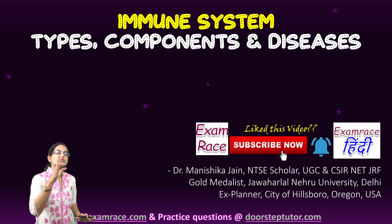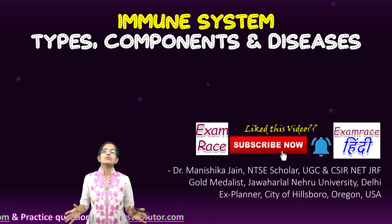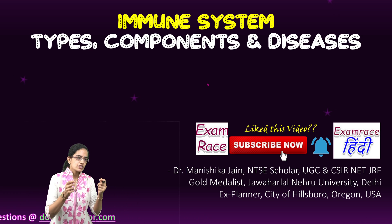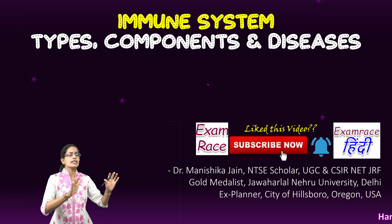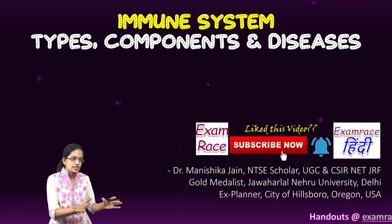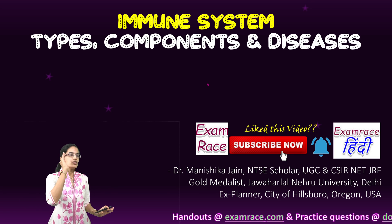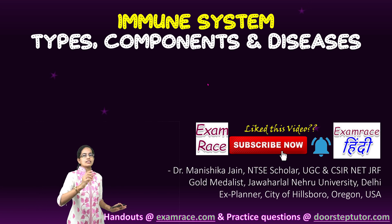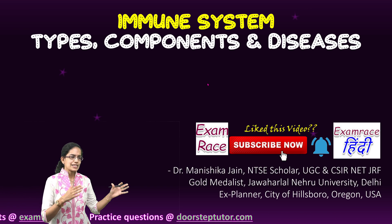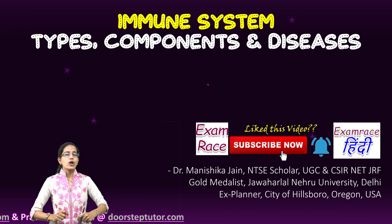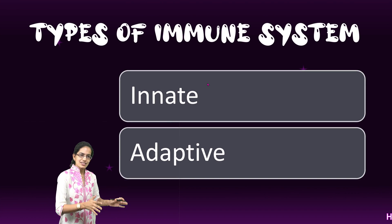Immune system types, components and diseases related to the immune system. The immune system is a collection of structures and processes within the body that helps us to fight against any infection, any disease, or any foreign body that enters into our system. It identifies foreign pathogens — whether in the form of a virus, bacteria, or parasite — and our body needs to distinguish them from the original cells.